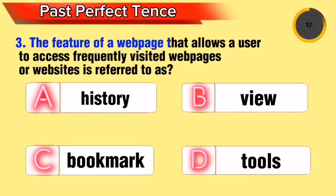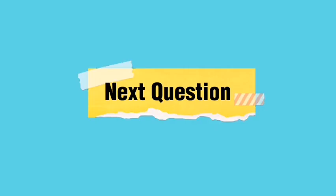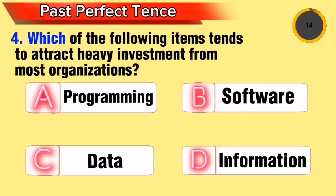Question 3: The feature of a webpage that allows a user to access frequently visited webpages or websites is referred to as what? Question 4: Which of the following items tends to attract heavy investment from most organizations?